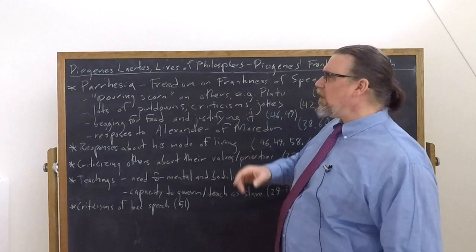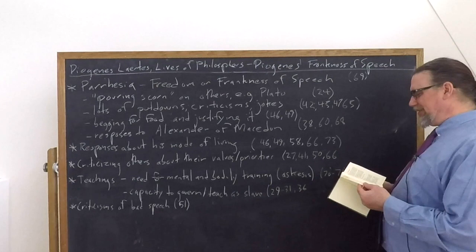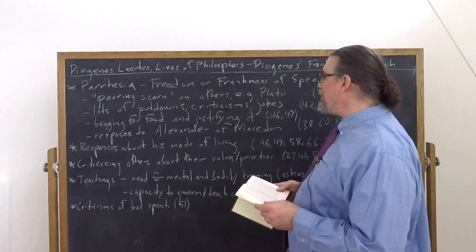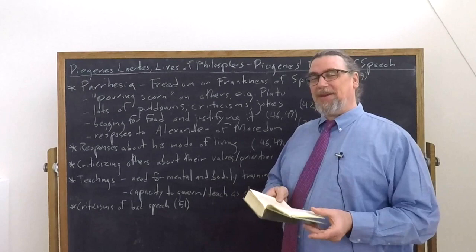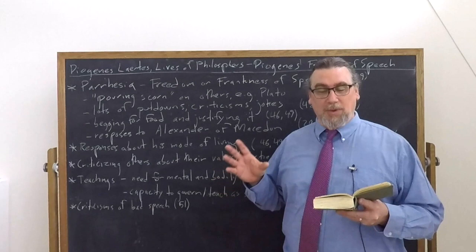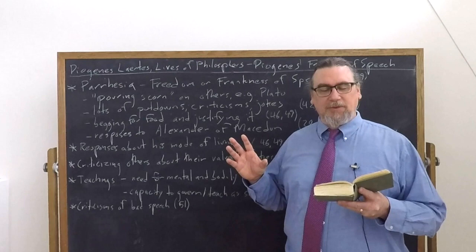He's said to have poured scorn on others. Scorn is when you're criticizing and you're doing so not in a sort of constructive way, but you're making fun of them. Plato was a prime target, apparently of Diogenes, but he wasn't the only target. So there's this great passage. He was great at pouring scorn on his contemporaries, the school of Euclides, which is the Megarian school, he called bilious. Plato's lectures, a waste of time. The performances at the Dionysia, great peep shows for fools.